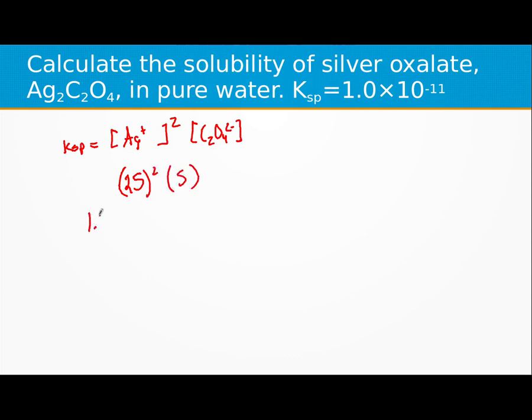So we have a 1.0 times 10 to the negative 11th. Our KSP would be equal to 4S cubed.